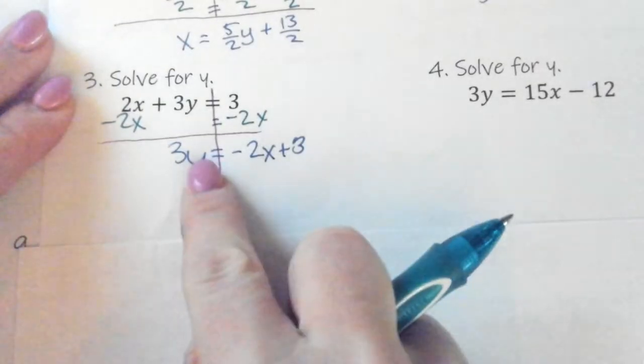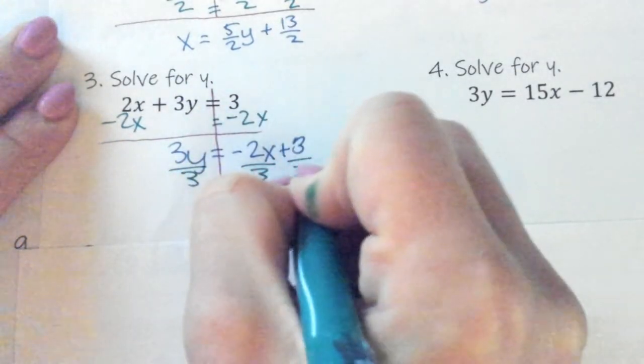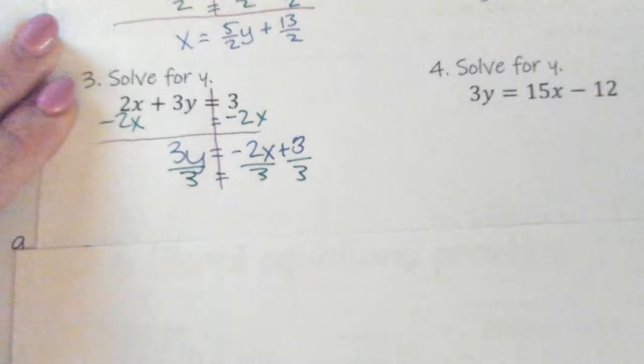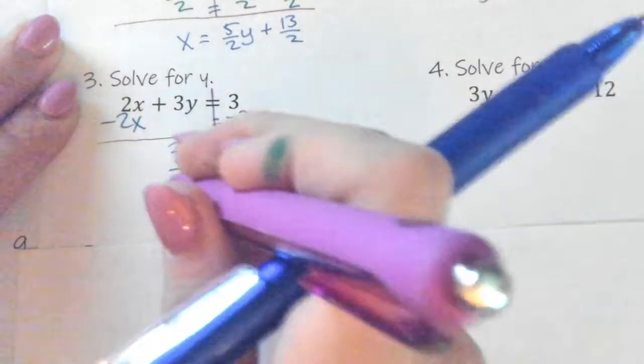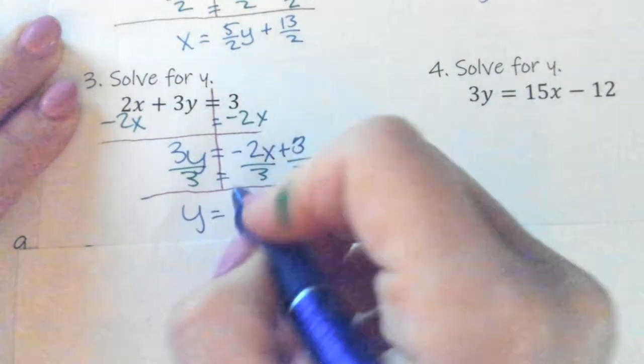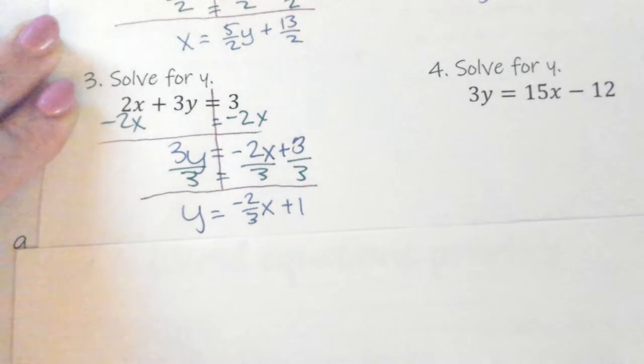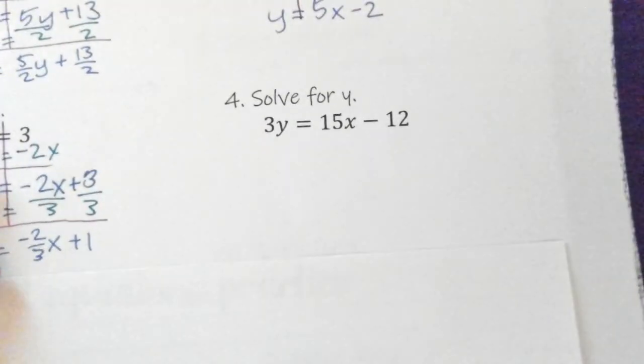My y is still not by itself. It's being multiplied by 3, so opposite operation says divide everything by 3. Then I am left with y equals negative 2 over 3x plus 1. 3 divided by 3.